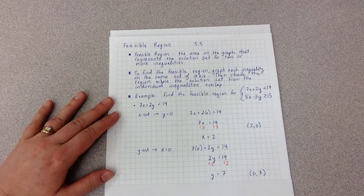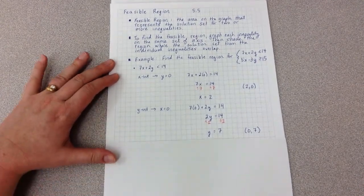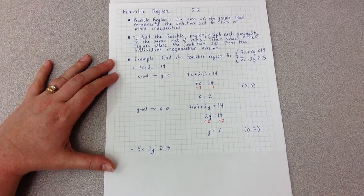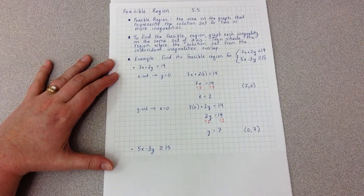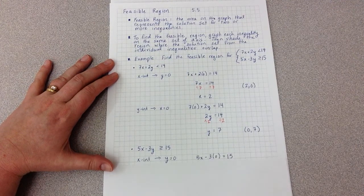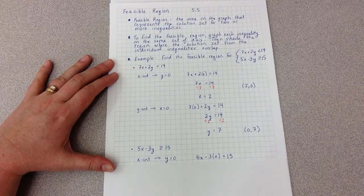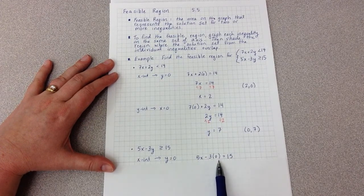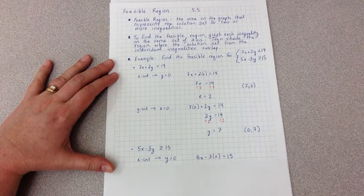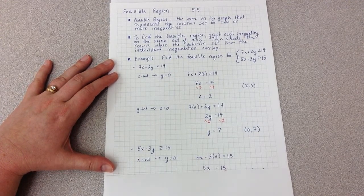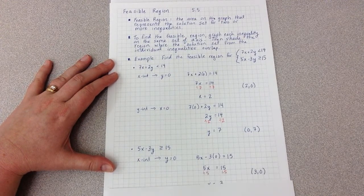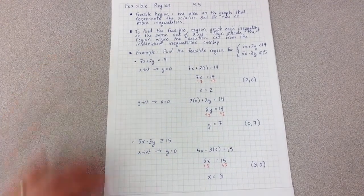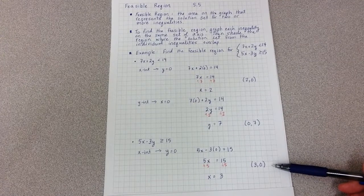Now I'm going to go through this exact same process, but for the second equation, 5x minus 3y is greater than or equal to 15. First, I'll find the x-intercept. That happens when y equals 0. So I have the equation 5x minus 3 times 0 equals 15. I simplify. I get 5x equals 15, divide by 5, x equals 3. I write that as a point, 3, 0.